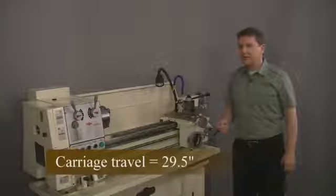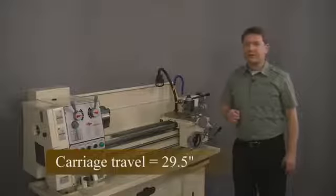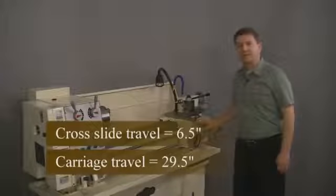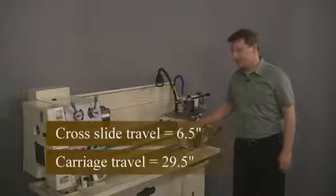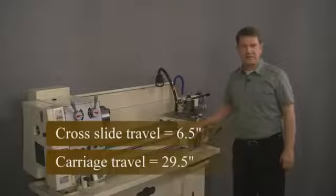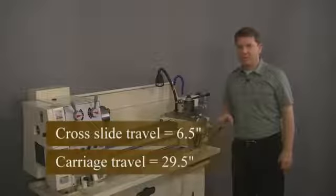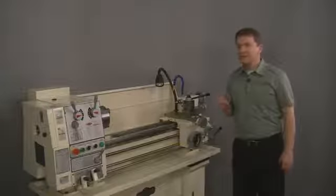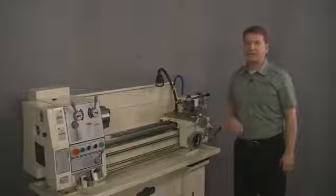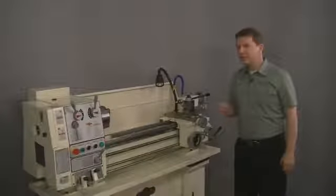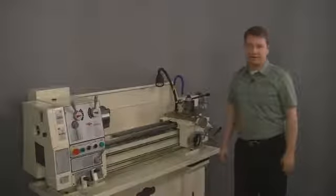So just to recap, we need to choose a lathe kit that has a cross slide travel of at least 6.5 inches and a carriage travel of at least 29 and a half. Now remember, magnetic scales can be easily cut or shortened, so for this lathe we would choose an 8x40 lathe kit and simply cut the scales down to the exact length we need.